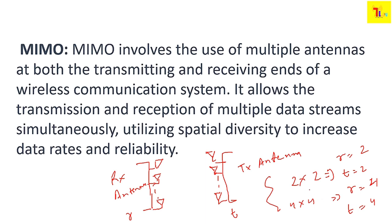Before discussing the mathematical model, you must know what MIMO is. In MIMO we use the same spectrum with multiple antenna ports, increasing our data throughput by a factor proportional to the number of antennas. For example, if one antenna gives 100 Mbps, using two antennas in the same spectrum gives 200 Mbps.